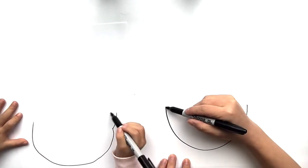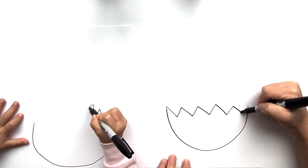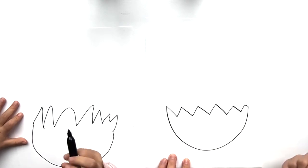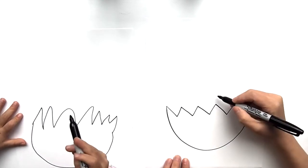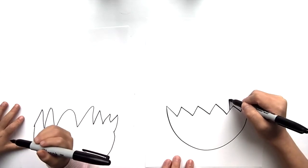Good. All right, then we're going to draw the cracked eggshell, which is like jagged edges. Yeah, good job. And now we're going to draw the actual dinosaur coming out. So we're going to draw a line up.